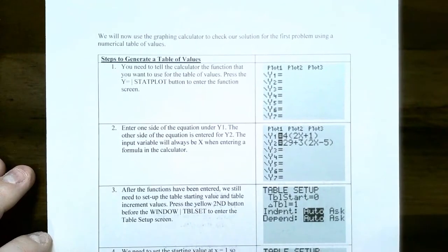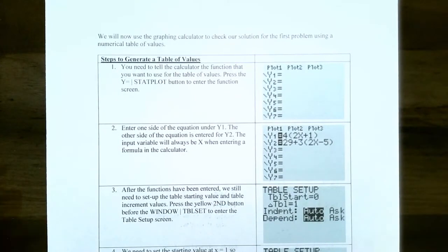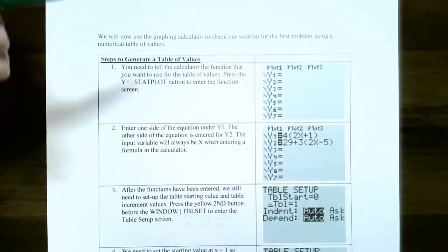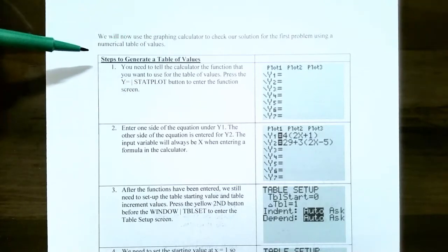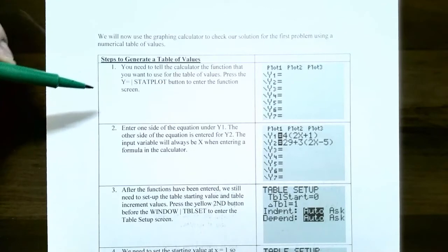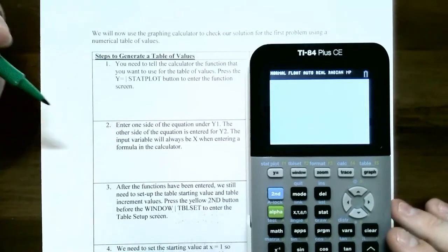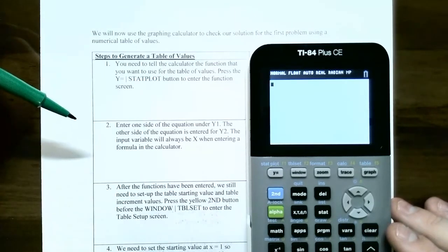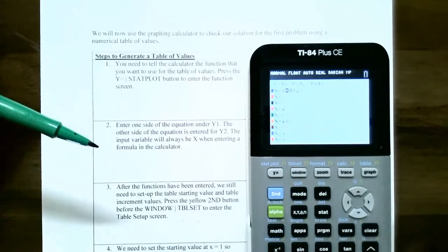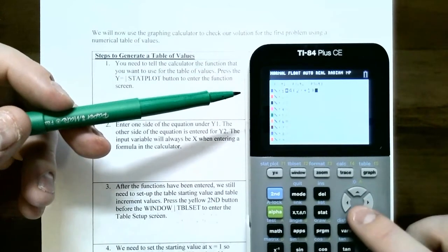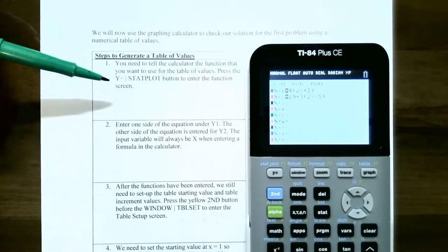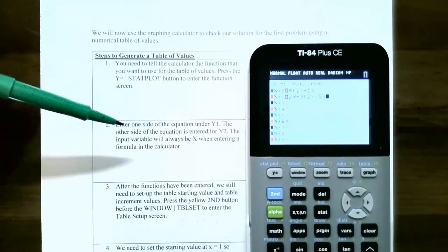Now that we know how to solve a linear equation by hand, you can also use a graphing calculator. There are two methods. The first is a numerical table of values — you generate a table and find where the left side and right side of the equation are equal. Enter the left side of the equation as y1 and the right side as y2 in the y-equals screen.